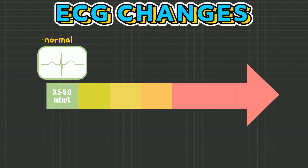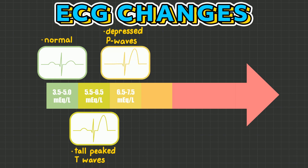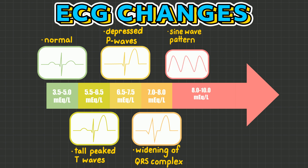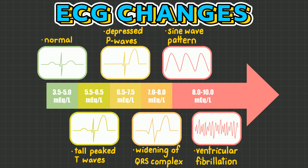Hyperkalemia also presents with some ECG changes, the most common being tall peaked T waves, but also depressed P waves, widening of the QRS complex, a sine wave pattern, and ventricular fibrillation.